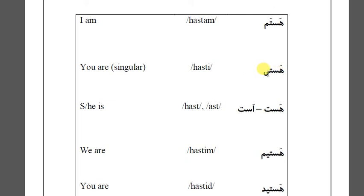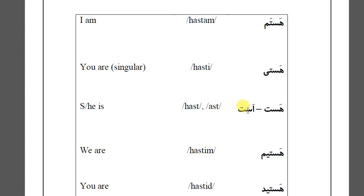Remember, the present verbal ending -i is for 'to,' and 'to' means 'you' for one person — singular. So hasti means 'you are' (singular).